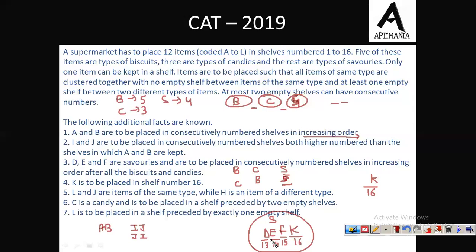Now, since L and J are items of the same type, L will also come with the savouries cluster. But wait — H is an item of a different type. C is a candy.